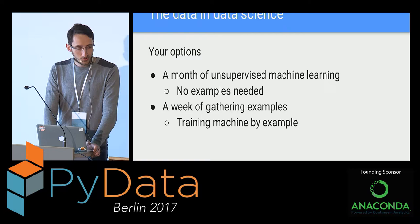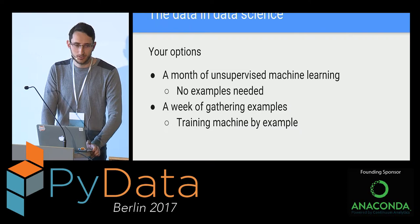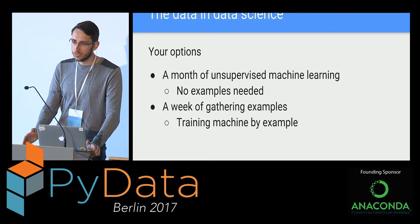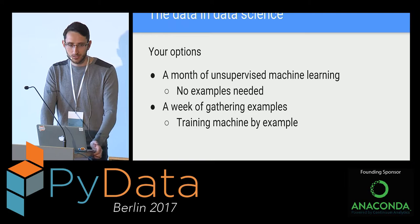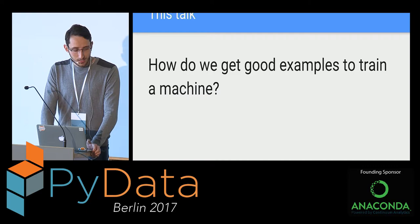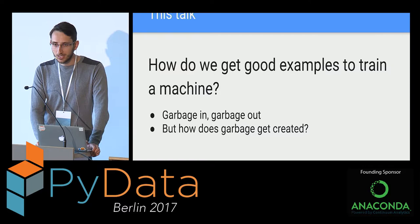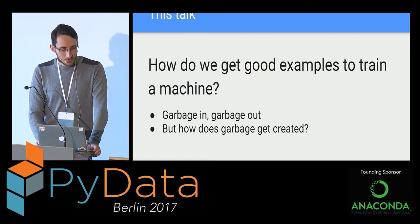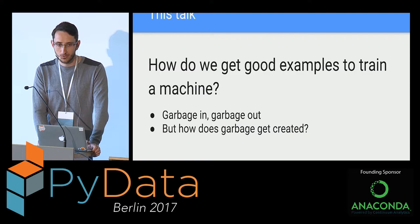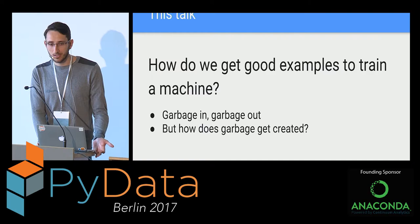The common knowledge is: instead of doing a month of unsupervised machine learning, you should get a bunch of people and spend a week building up a big set of examples, then train the machine by example — much the same way you get trained in school. The question I want to ask is: how do we get good examples? Because the common knowledge in machine learning is garbage in, garbage out. If you're providing rubbish data, your machine will learn that rubbish, and you end up with nothing useful.